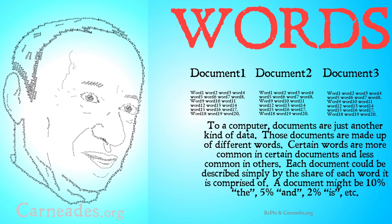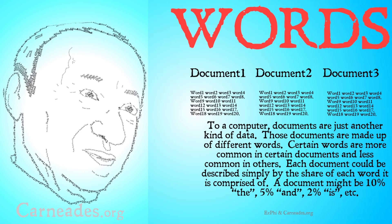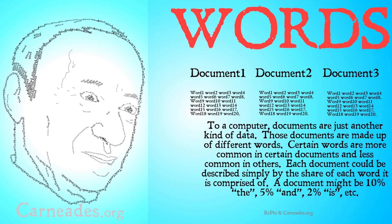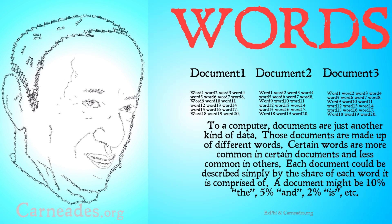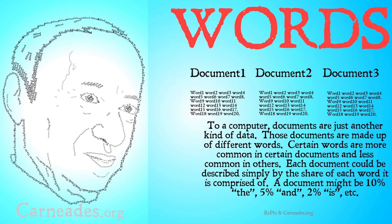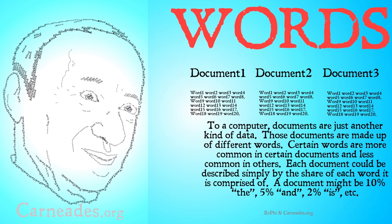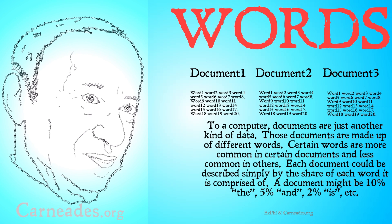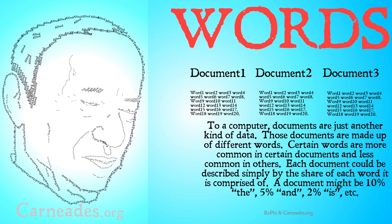To a computer, documents are just another kind of data. Those documents are made up of different words. Certain words are more common in certain documents and less common in others. Each document could be described simply by the share of each word it's comprised of — a document might be 10% 'the', 5% 'and', 2% 'is', etc. Less common words, of course, will have smaller percentages.